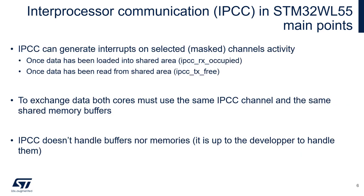The Interprocessor Communication Controller can generate interrupts on selected masked channel activities: once data has been loaded into the shared area — the IPCC RX Occupied flag — and once data has been read from the shared area — the IPCC TX Free flag. To exchange data, both cores must use the same IPCC channel and the same shared memory buffers, requiring some modification on the linker file. IPCC doesn't handle buffers or memories, so it is up to the developer to handle them.